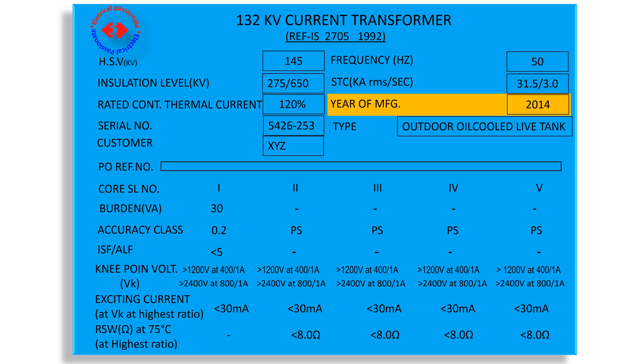Next we see year of manufacture, serial number and type. Type is also an important subject according to design aspect where it would be installed. Here type outdoor oil cooled live tank. So the CT should be installed at outdoor substation. It is oil cooled and it is live tank. Live tank means top tank which carries windings and cores are connected with operating system voltage and insulated from bottom tank and structure.